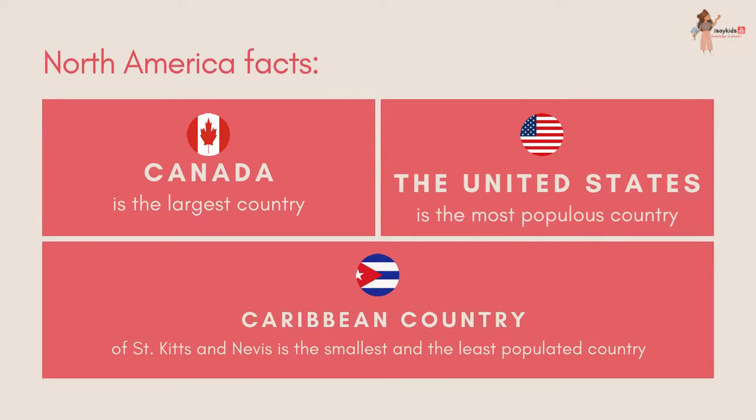Canada is the largest country. The United States is the most populated country. The Caribbean country of St. Kitts and Nevis is the smallest and the least populated country.